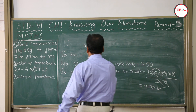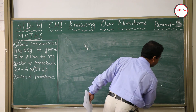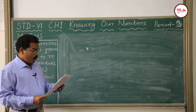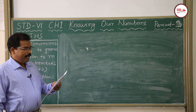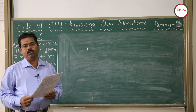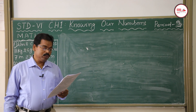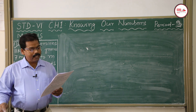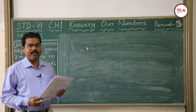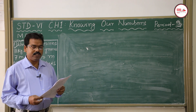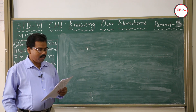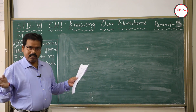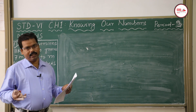Let us discuss one more word problem to end period 3. A bookshop sold 8,538 books in the month of June. Its sale rose by 212 books in the next month. If profit on selling one book is Rs. 25, find the total profit in these two months.